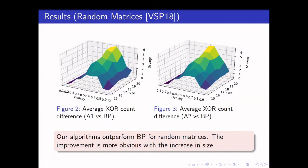Over here, we show the results of comparing our algorithm with the BP algorithm on random matrices. To recall, A1 refers to the one without the tiebreaker, and A2 refers to the one with the tiebreaker. We use random matrices of size 15 by 15 to 20 by 20, and densities spread across 0.1 to 0.9. The improvement is more obvious when we increase the size and peaking when the density is about 0.4 to 0.6.